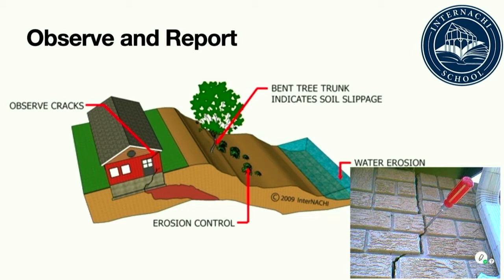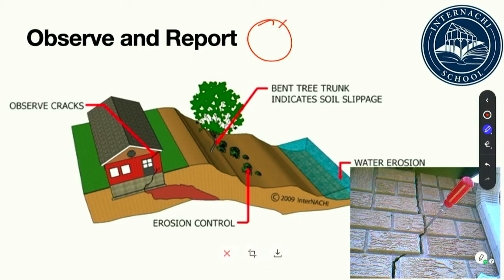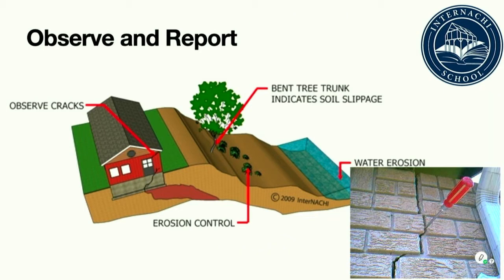Reporting structural observations is part of a home inspector's job. Offering a definitive determination as to the cause of any defects or anomalies is not. Remember, home inspectors are barred from providing engineering services. The job of the home inspector is to observe and report. This course is designed to help you do just that.